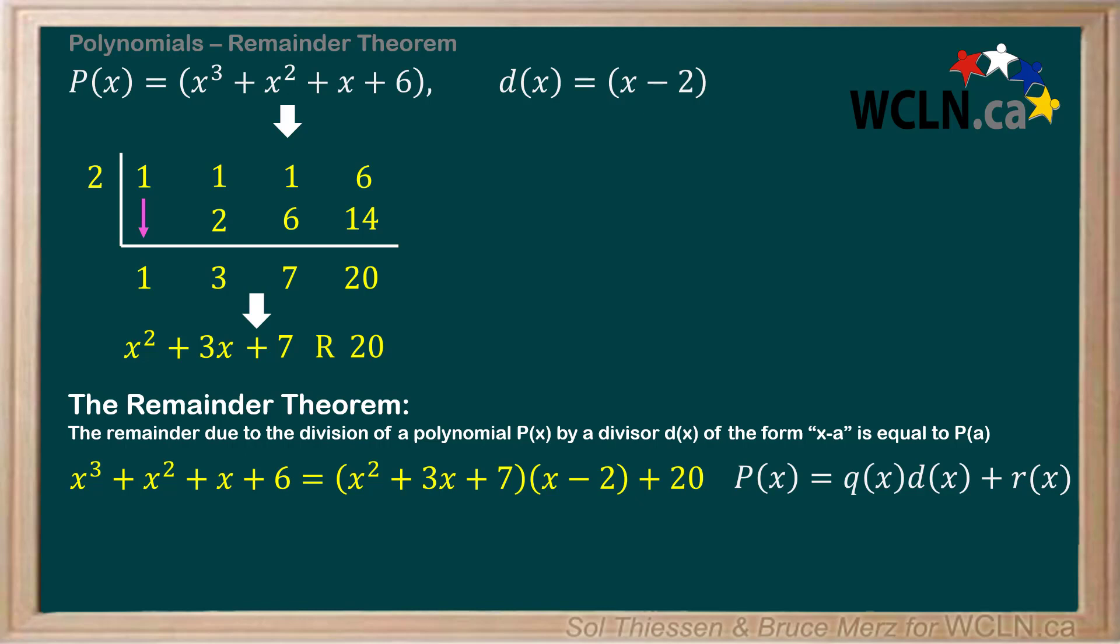Let's evaluate the entire division statement at x equals 2 to give us further insight as to why this is true. When we do this, we see that the divisor on the right-hand side will evaluate to 0, and since it is being multiplied with the quotient we found earlier, it doesn't matter what the quotient evaluates to, since anything times 0 gives us 0.